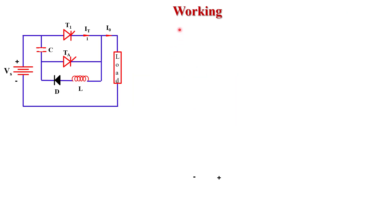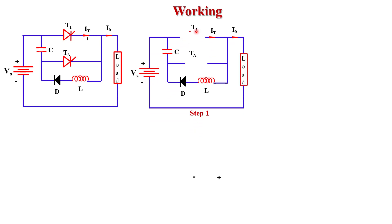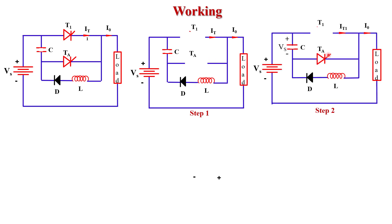In step 1, initially we assume that both thyristors T1 and TA are turned off, and the capacitor is not charged. Since we assumed the capacitor is initially charged with plus Vs voltage, to charge it we first turn on the auxiliary thyristor TA by applying a gate triggering pulse. When TA turns on, it behaves like a short circuit, and current flows through supply voltage Vs, through the capacitor, TA thyristor, load, and back to the supply voltage.